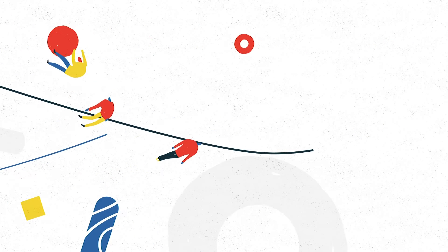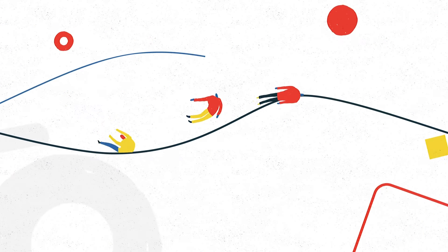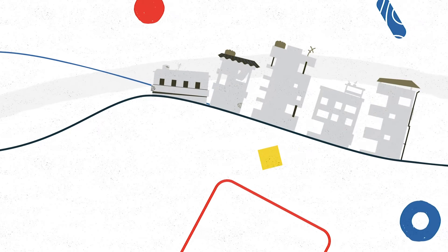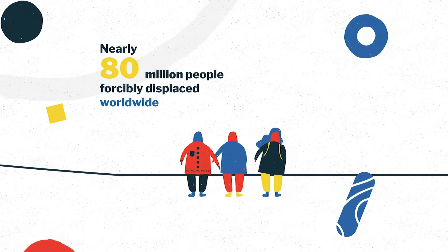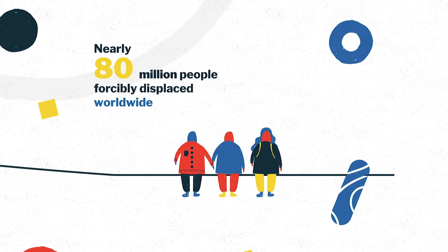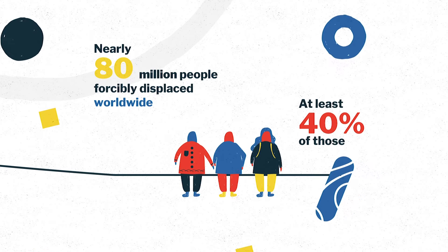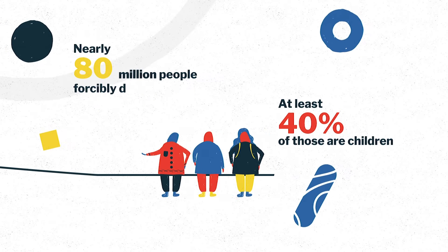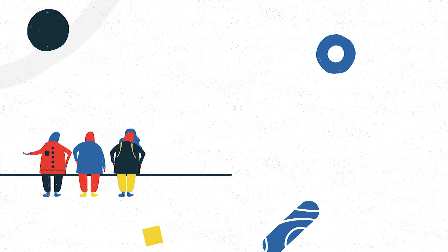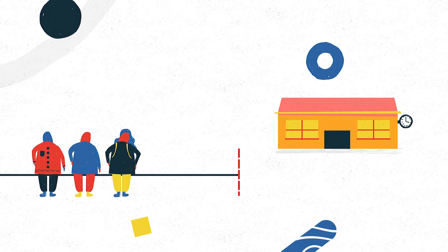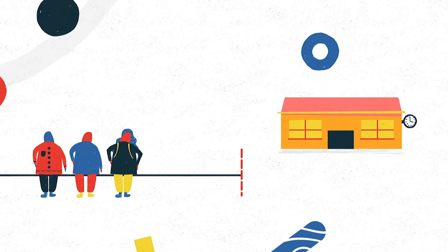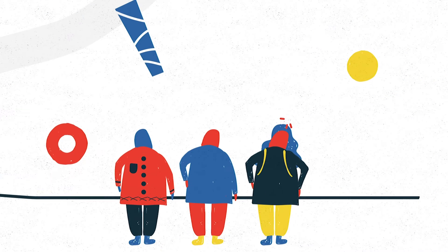Global forced displacement is at a record high. Displaced populations often live in precarious conditions next to vulnerable host communities. Over 40% of displaced people are children. Their access to safe spaces to learn and play is limited, which can be detrimental to their healthy development and overall well-being.